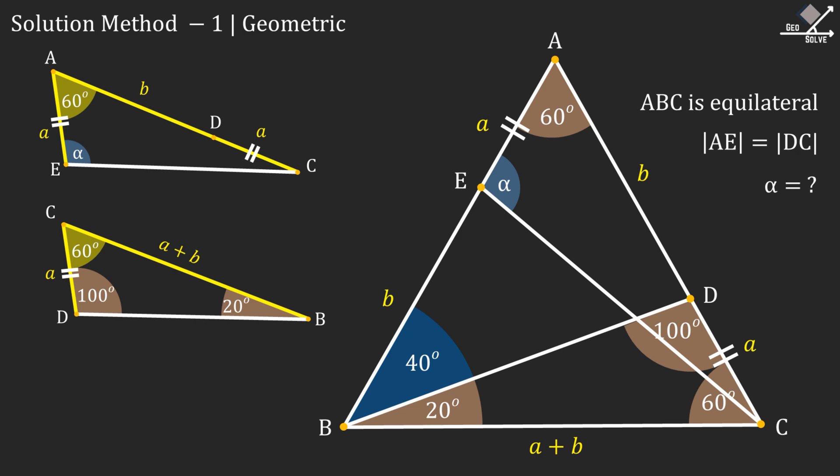the two sides and the angle included between those sides of these two triangles are same. And that means these two triangles are congruent by SAS rule. From here we can see that the angle alpha is 100 degrees. And that is the answer to our question. Now let's move on to second solution method.